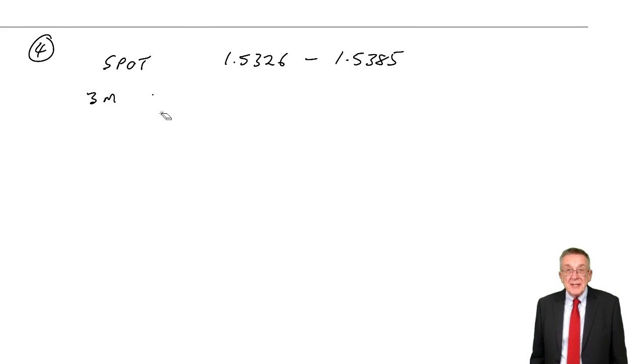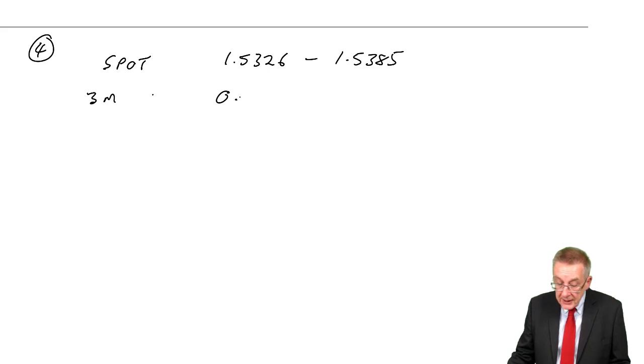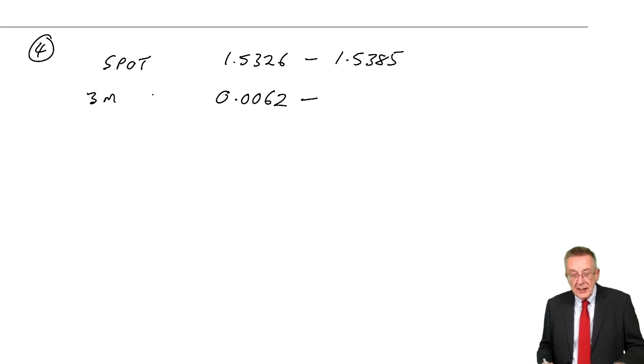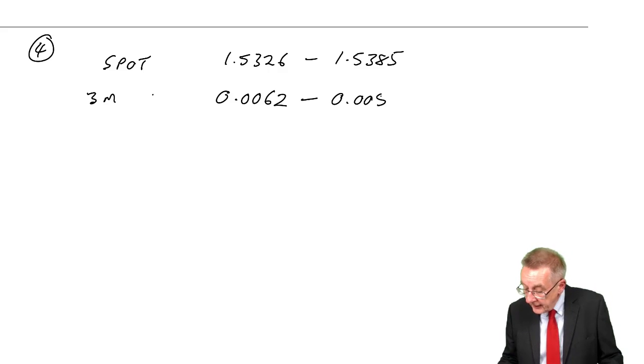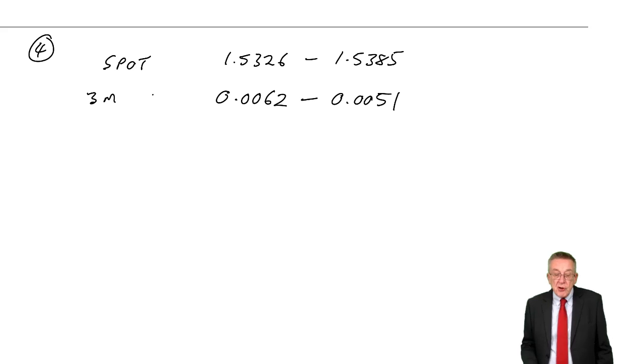0.62 cents is 0.0062 dollars, and 0.51 of a cent, well, one cent is 0.01 dollars, 0.5 cents is 0.0051 dollars. So that's the first trick.